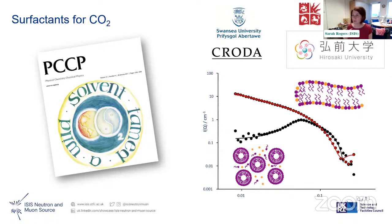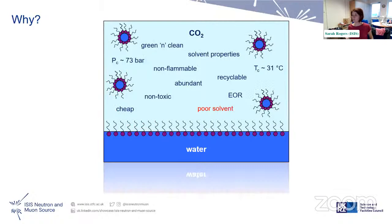Surfactants for CO2 is something we've been doing at ISIS for a long time. It was initially kicked off by groups at the University of Bristol and UEA — Julian Eastoe and Dave Steytler — looking at surfactant assembly in supercritical CO2. The idea is you can take CO2 from the atmosphere, compress it into a supercritical fluid, and use that as a solvent for chemical processes.